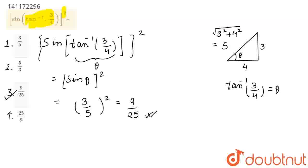So, option 3 is correct, right? 9 upon 25. I hope you found this solution helpful. Thank you.